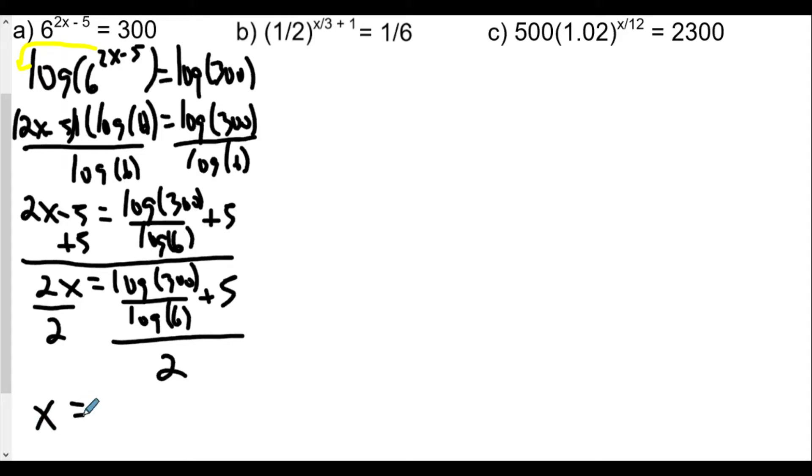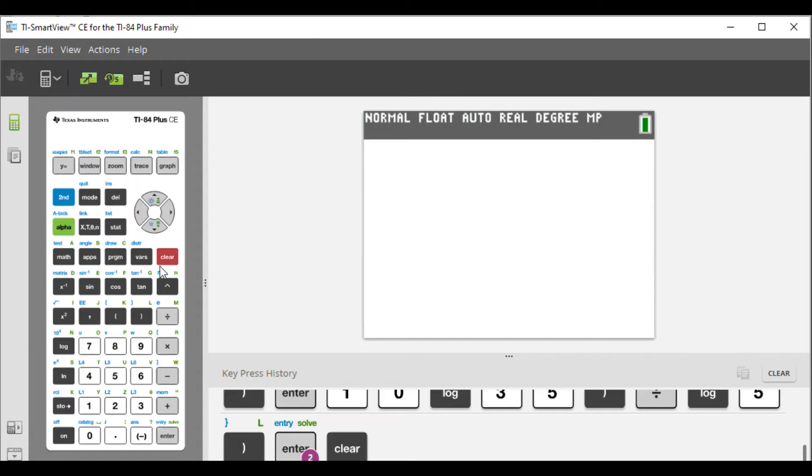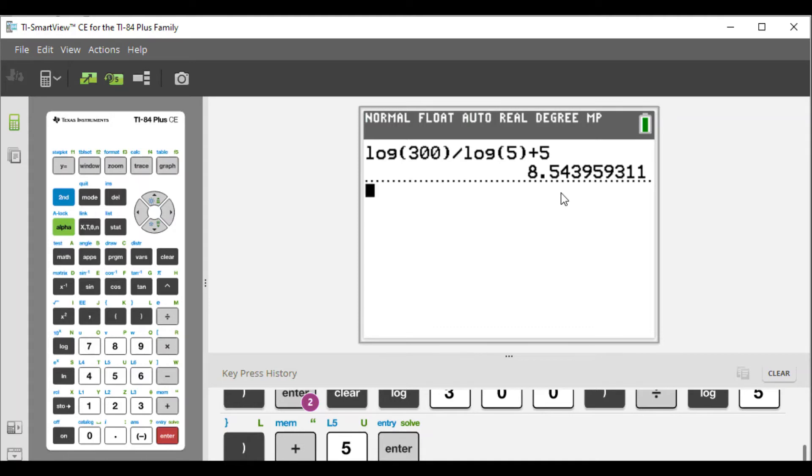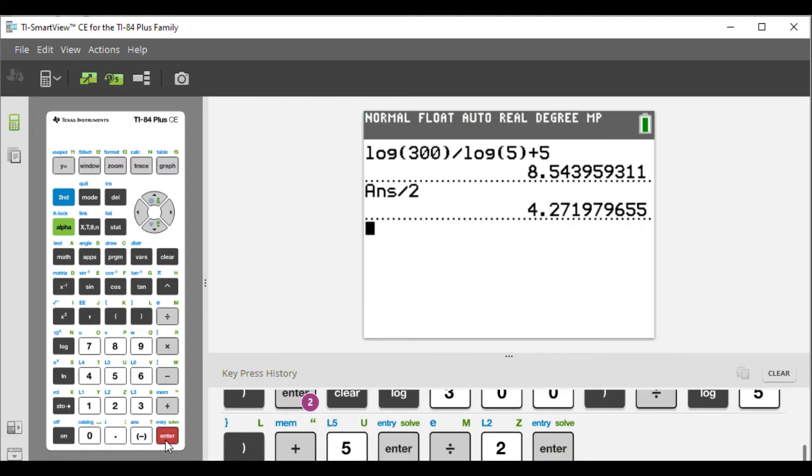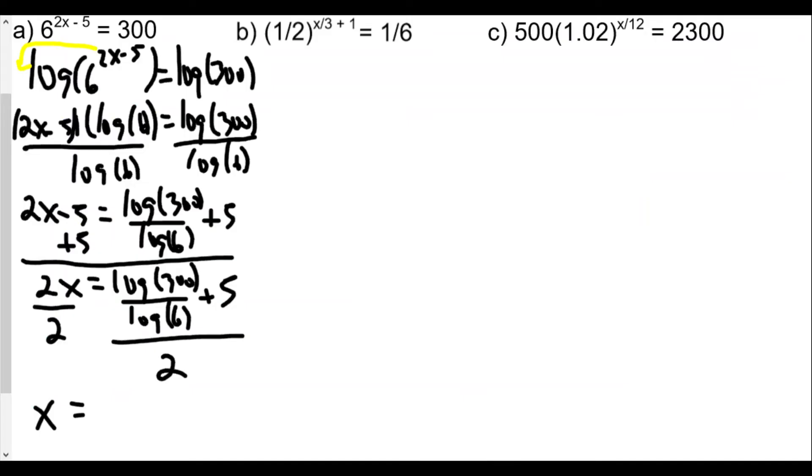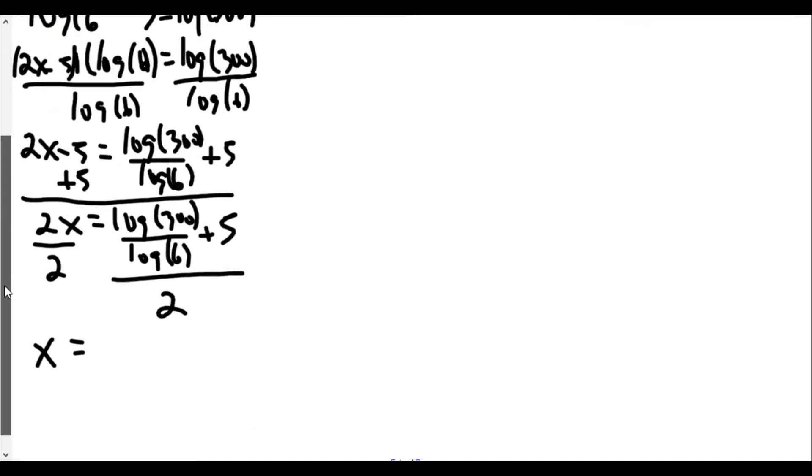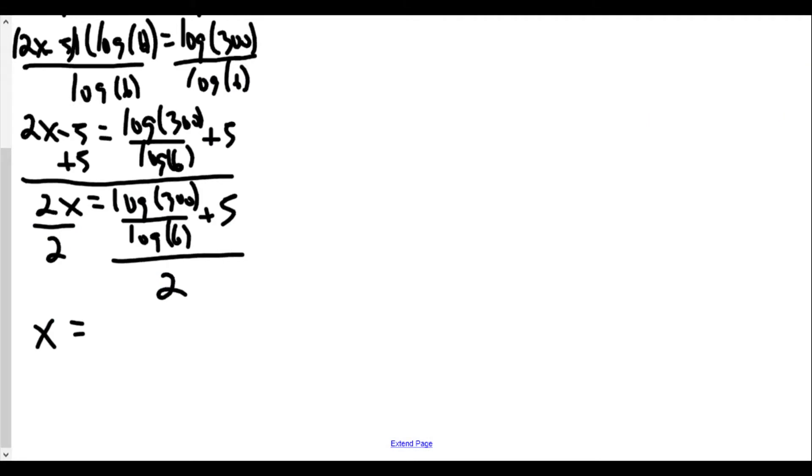On our calculator, we'll take log of 300 divided by log of 6, then add 5. After we found that, I'll clear all this up here. So log of 300, close parentheses, divide log of 5. After that, I believe we're adding 5, yes we are adding five. So adding 5 plus 5. So we get this decimal here, 8.543959311. But we're taking this answer and dividing it by 2. And so we get 4.271979655. Well really, to the nearest hundredth, 4.27 is what x is equal to. Just to make sure the nearest hundredth, yes, 4.27. So that's the answer for the first question here.